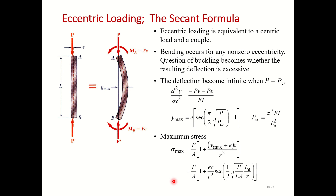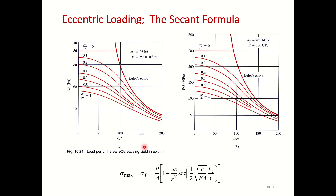On the graph, the x-axis shows slenderness ratio Le/r and the y-axis shows P/A — the axial stress. For long columns we have the Euler curve. If e is equal to zero, the entire eccentricity term becomes zero and we simply get P/A, which is force divided by area.